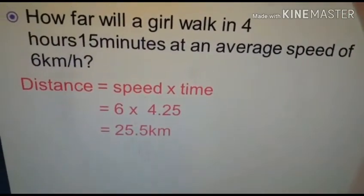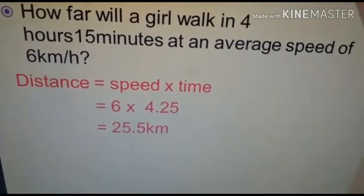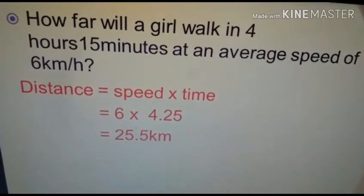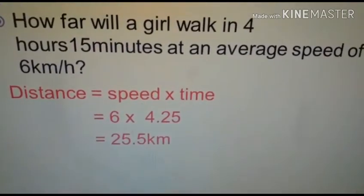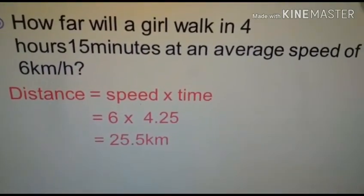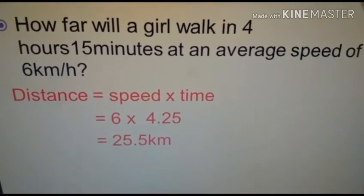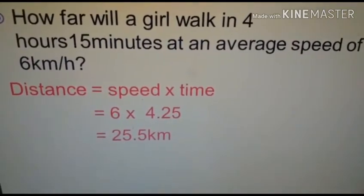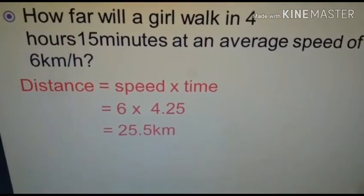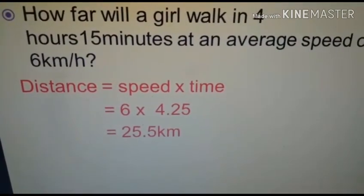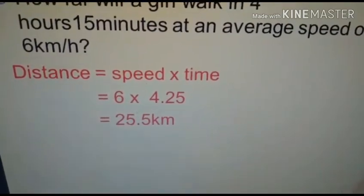The speed is 6 and the time is 4 hours 15 minutes. First, we want to convert 15 minutes to a decimal form. 15 over 60 will get 0.25, so 4 hours 15 minutes is 4.25 hours. Speed multiplied by time, 6 multiplied by 4.25 equals 25.5 km.